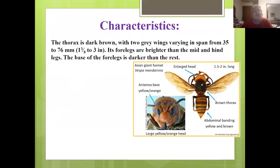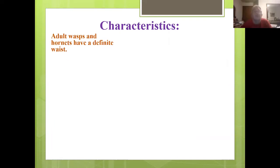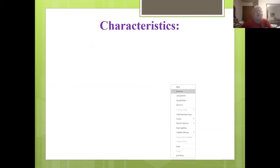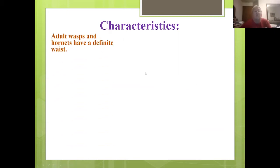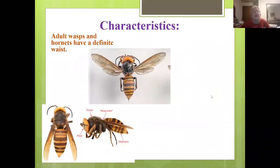Its four front legs are brighter than the rest of the legs — the mid and hind legs — and the base of the front legs is darker than the rest. Adult wasps and hornets have a definite waist, which is a split between the thorax and abdomen, whereas bees don't have that definite split.